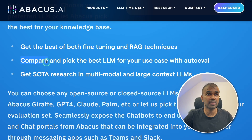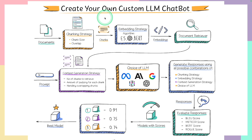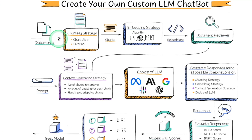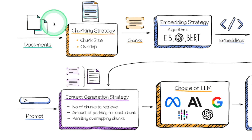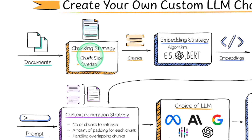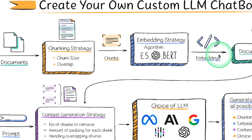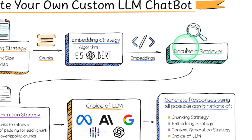In this, we are able to compare and pick the best large language model for your use case with auto eval. This is how you manually create your own custom LLM chatbot. It contains three different steps: one is document management, then it's about the prompt, and finally we'll get the model. In regards to documents, as soon as you upload a document, it will get divided into chunks, then it will be embedded into embeddings, and finally it will get stored in the database.